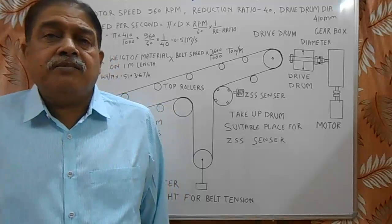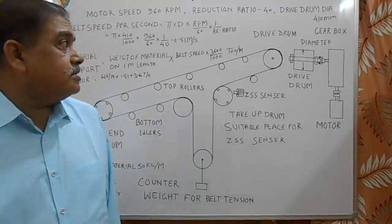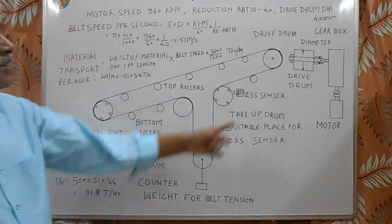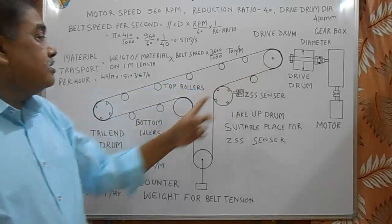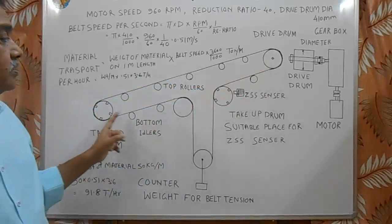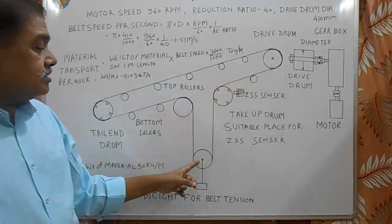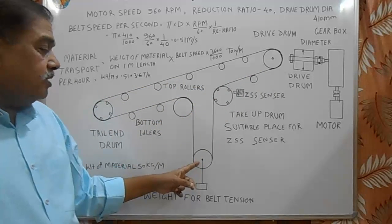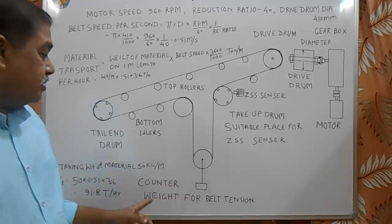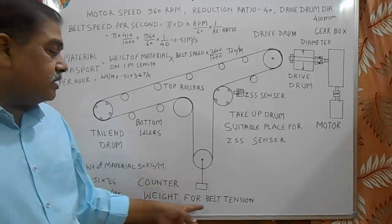In conveyor belts there are many components shown in this figure. First one is the drive drum, second one is return drum, and these are take-up pulleys and this is gravity pulley tension drum, counter weight or tension drum.